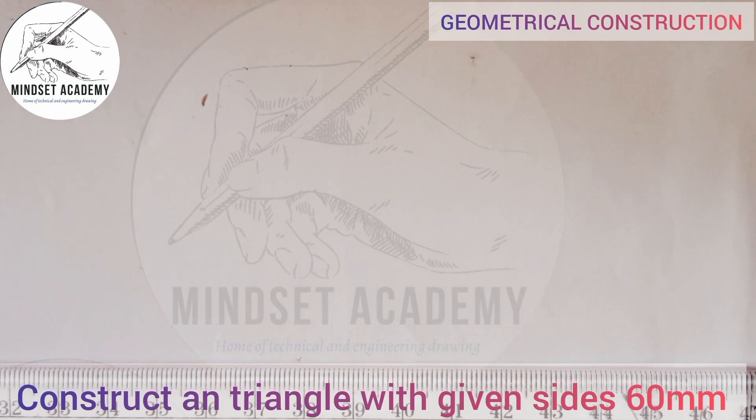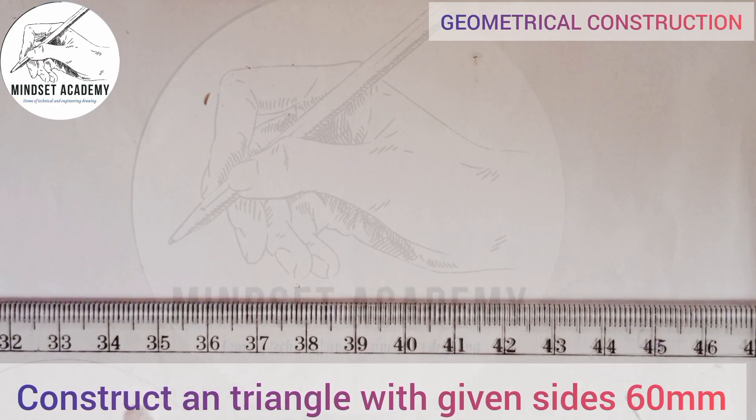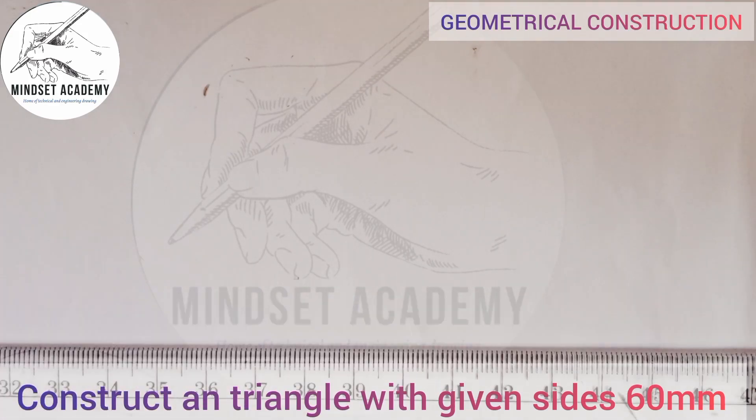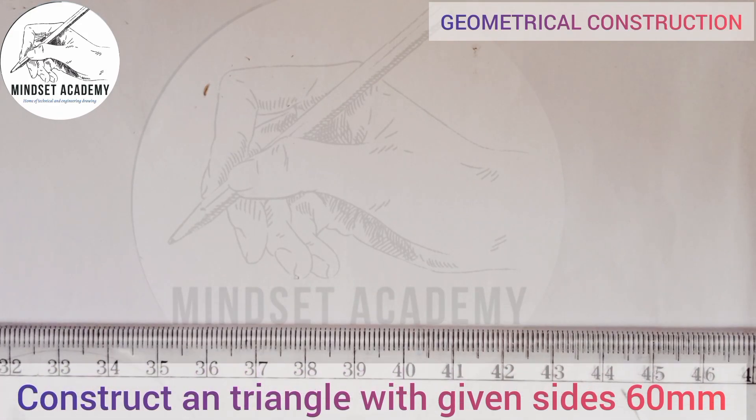When you are giving one side you are giving the entire side, so an equilateral triangle is also a polygon. Now what I will do is I'll just take my ruler or my T-square and I'm going to draw the horizontal line.